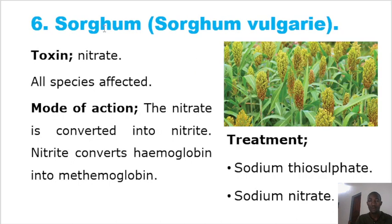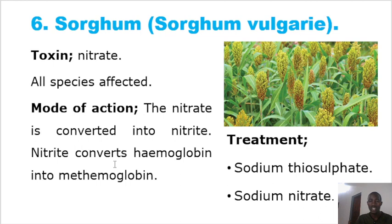Another toxic plant around the farm is sorghum, botanically known as Sorghum vulgare. The toxin present in sorghum is nitrate, which is converted into nitrite. The nitrite is toxic and inhibits the release of oxygen by converting hemoglobin into methemoglobin. Treatment involves giving sodium sulfate and sodium nitrate. Sorghum is a common plant in Uganda and East Africa.